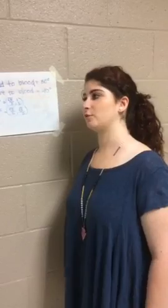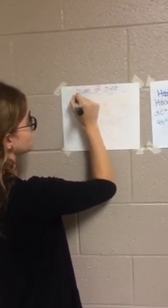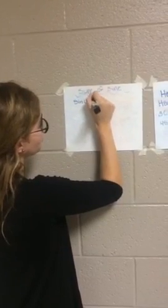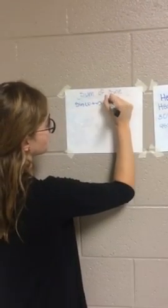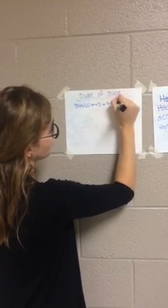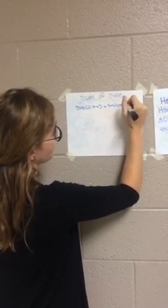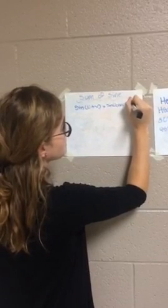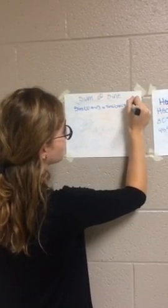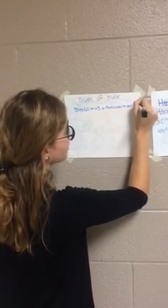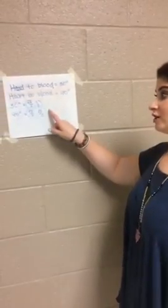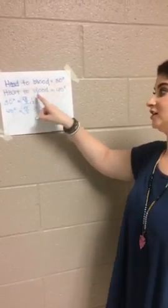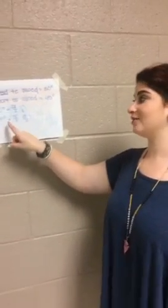Back at the forensics lab, we're going to figure out where the killer was standing. Alright Lindsay, let's start with our equation. So sine of u plus v equals sine of u cosine of v plus cosine of u sine of v. Remember lab partners, your u and your v are the two angles you find. Your sine is going to be your y value and your cosine is going to be your x value.